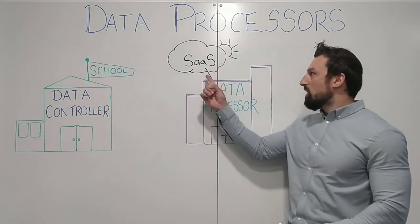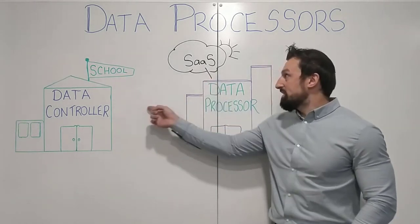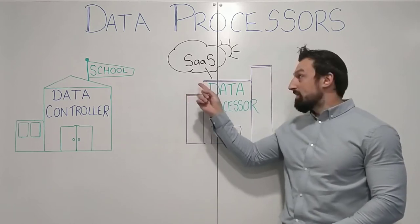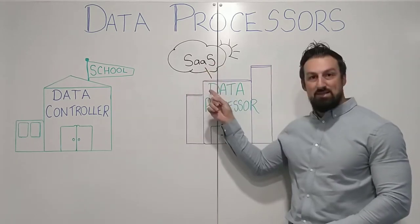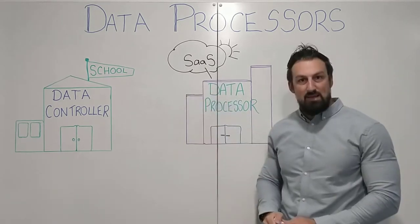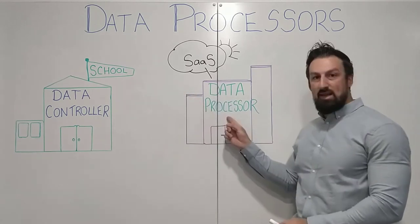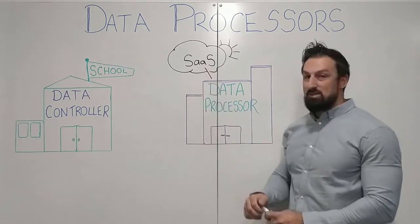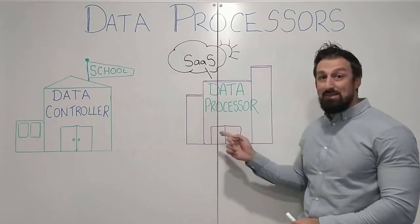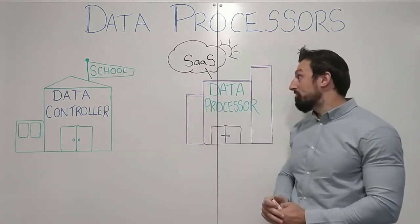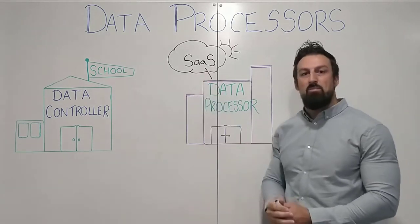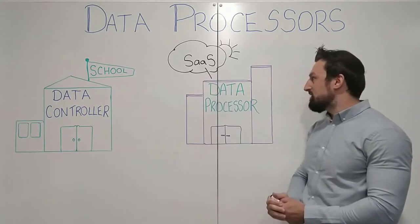And if we think about why, it's the school's data that's being input into that system, and as it's being hosted in that system, it's being processed by the processor. But the school manipulates that data. The school tells the data processor what data should be in there, it might change it, modify it, extract it, and tells it when it needs to get rid of it as well. So your cloud-based systems are a key example of what a data processor is.